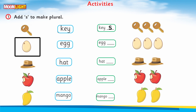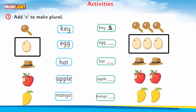Now you can see the picture of an egg. The spellings are E-G-G. This is one egg and it is a singular noun, so there is no 's' after it. But if you see many eggs, the spellings E-G-G are already given with a blank space. You have to write the letter 's' after the spellings, so it becomes 'eggs'. When it was singular it was 'egg', but when you place the 's' it becomes 'eggs' because it is plural.